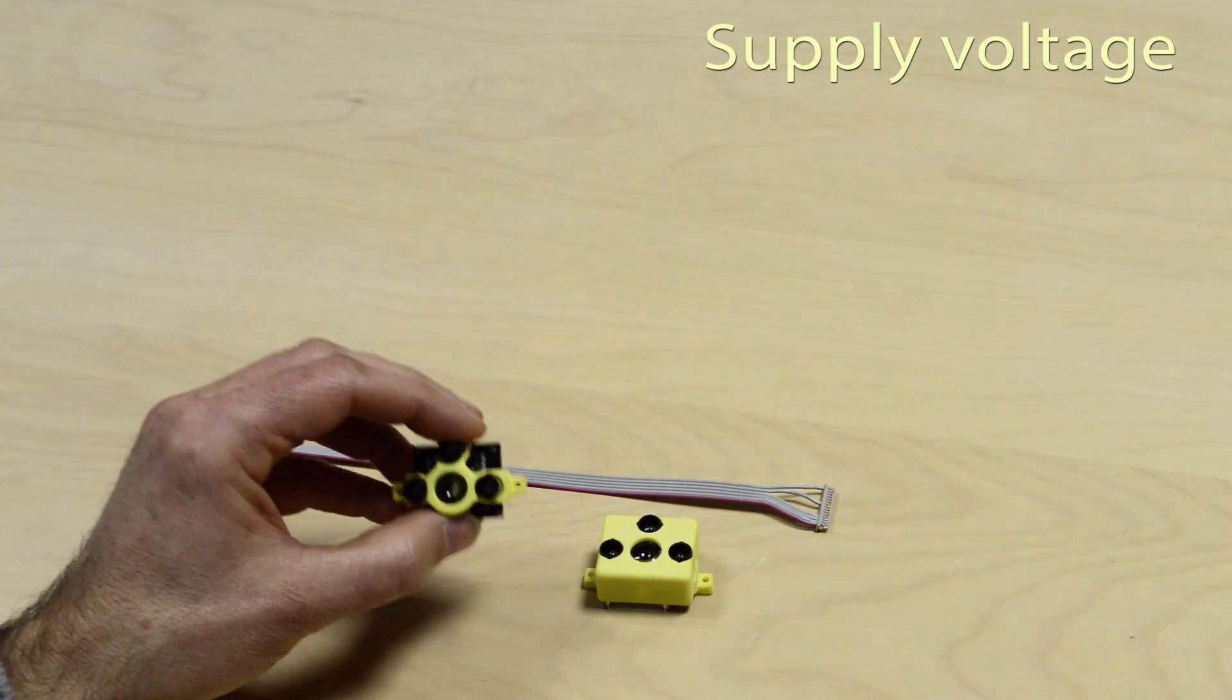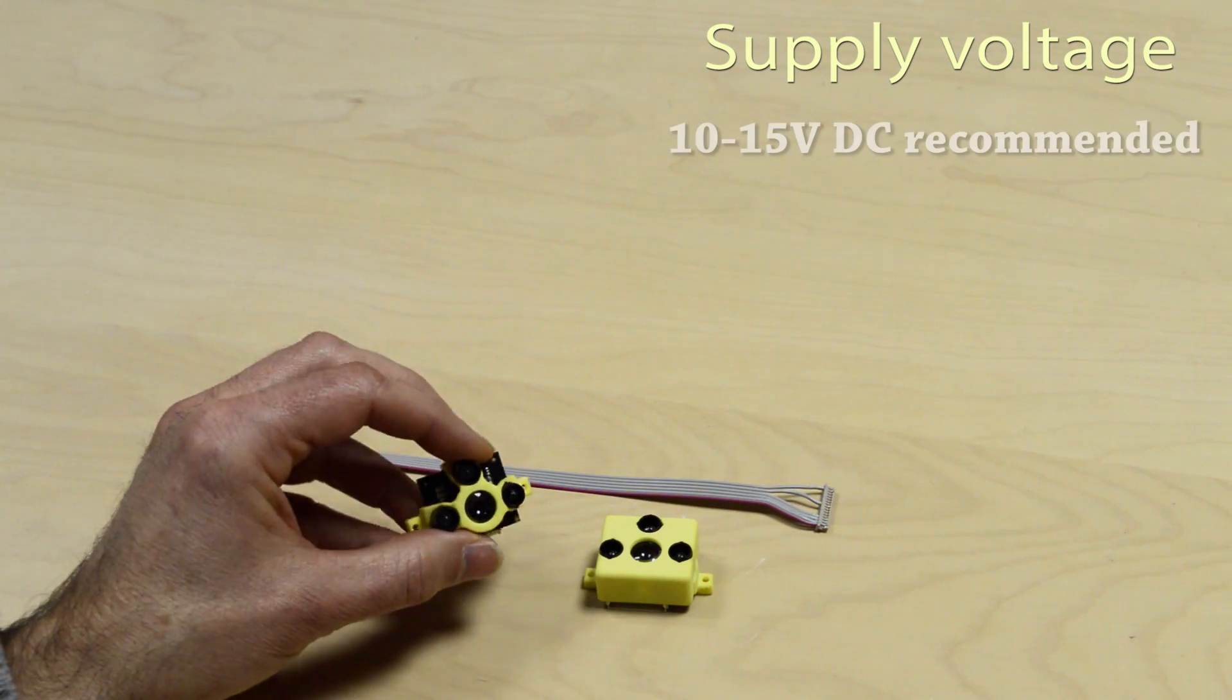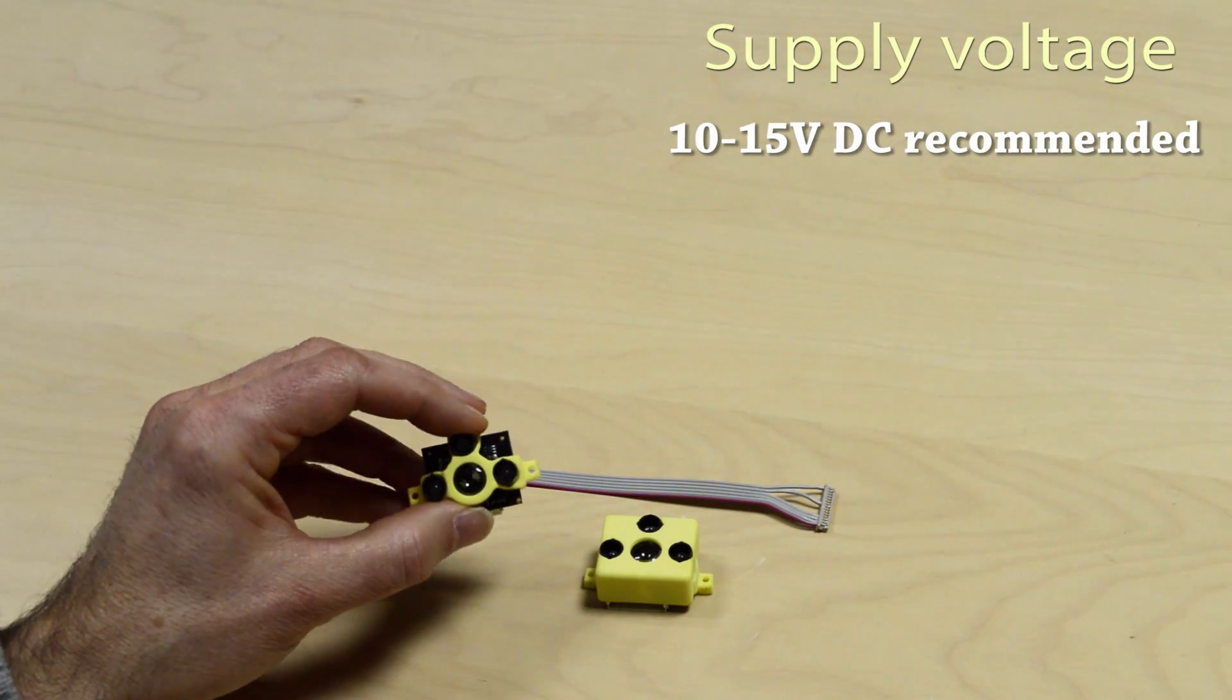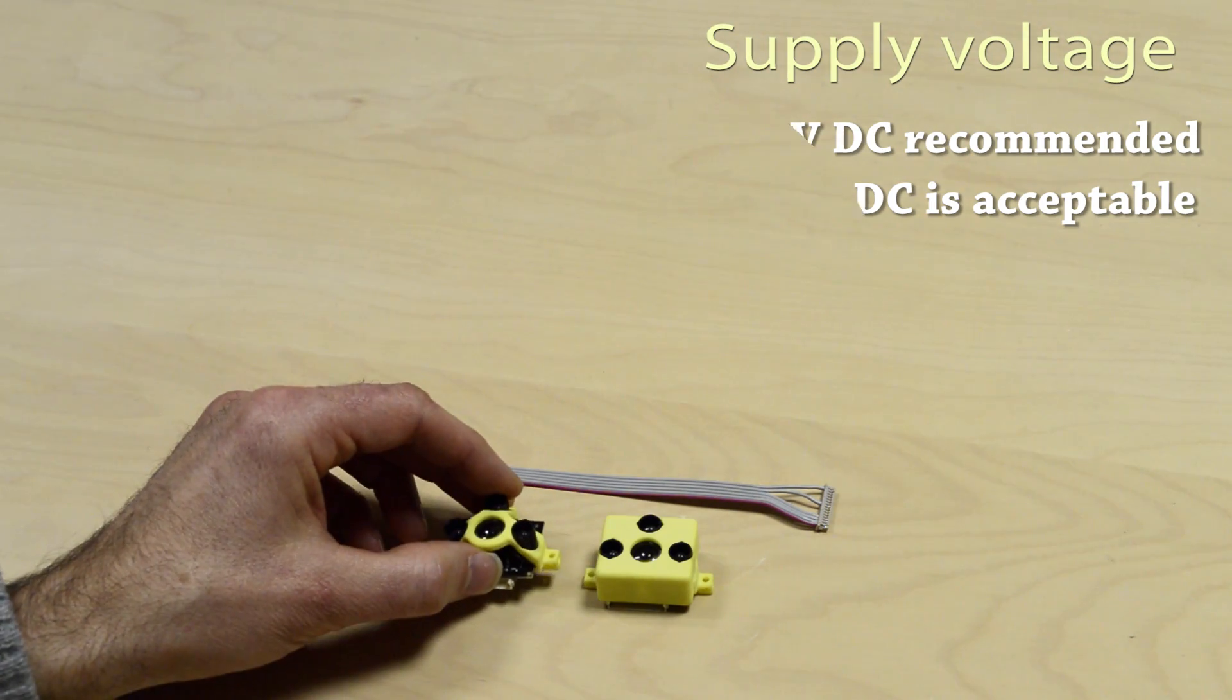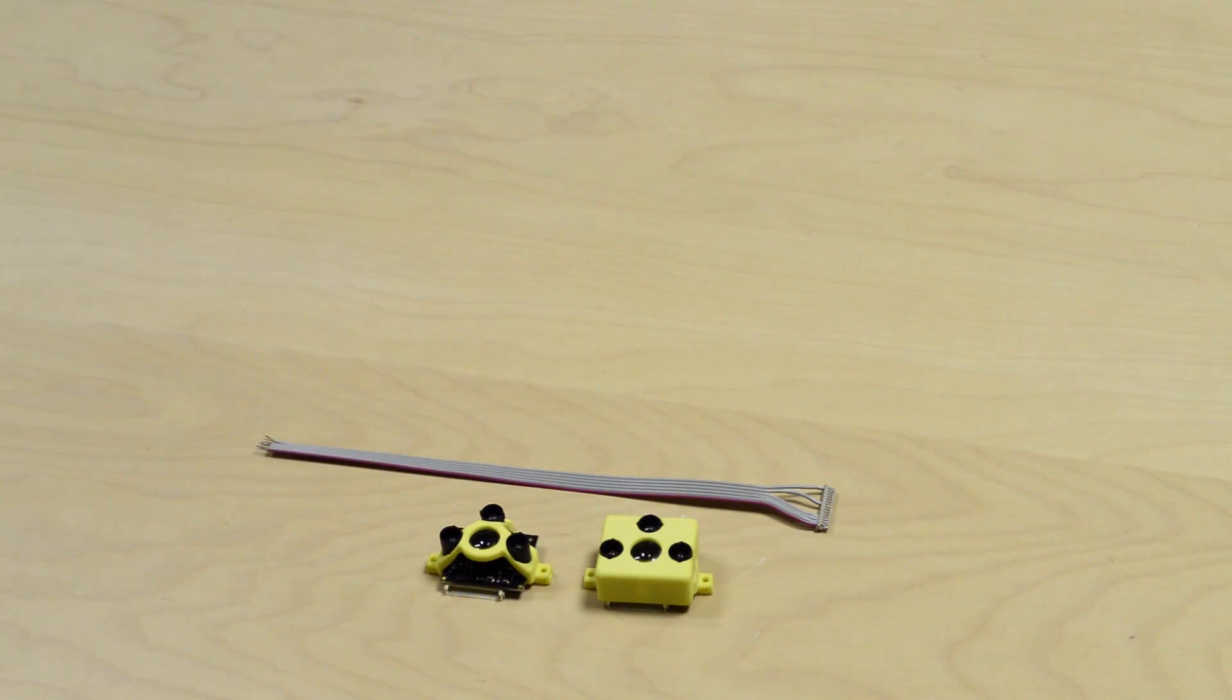We recommend a supply voltage of between 10 and 15 volts, but up to 20 volts is acceptable, and supply current is typically 50 milliamps at 12 volts. Sensors are very much plug and play with UART being the default interface, but I2C is also available with a firmware upgrade.